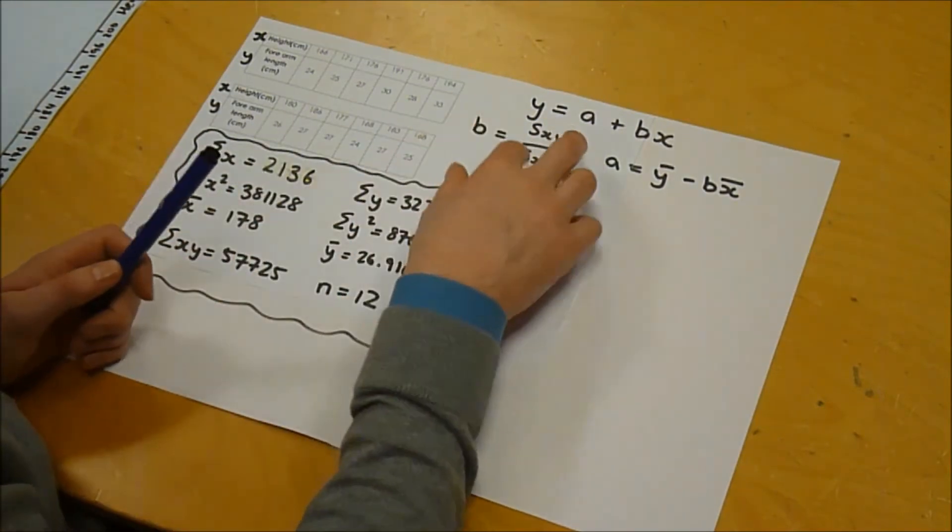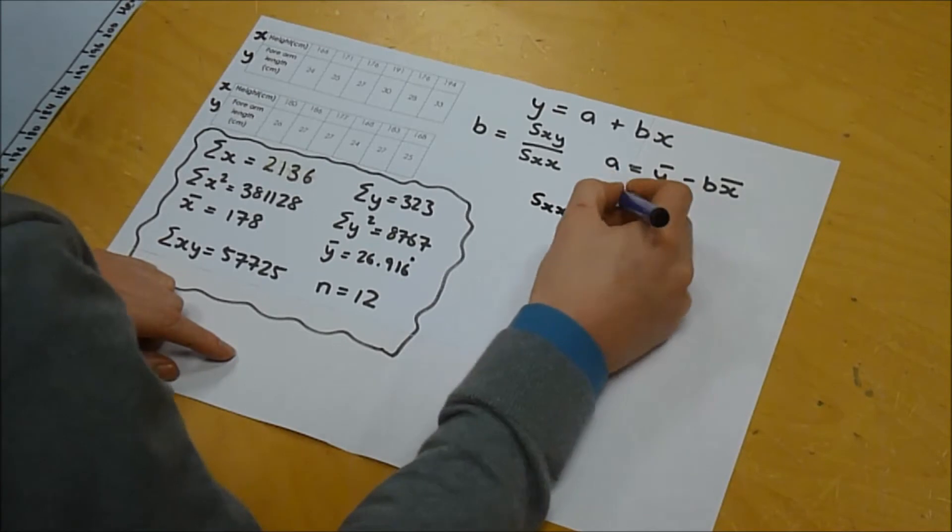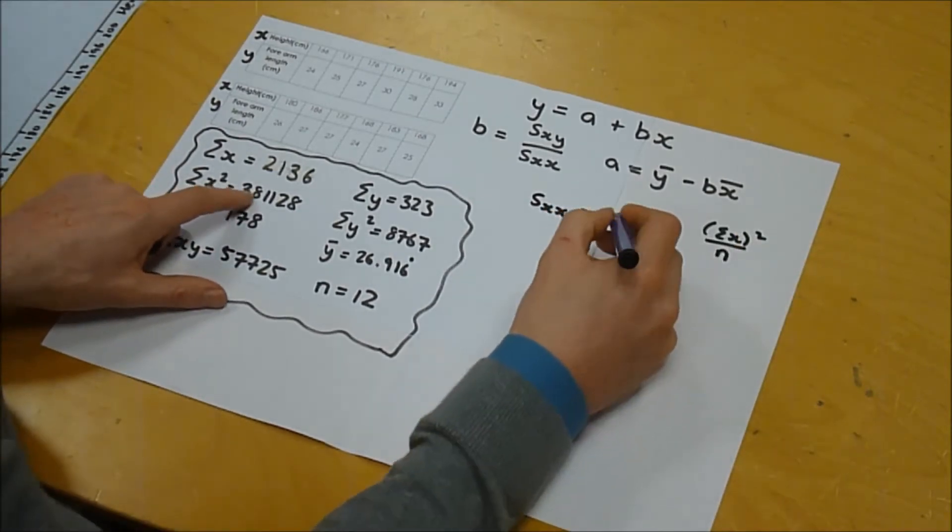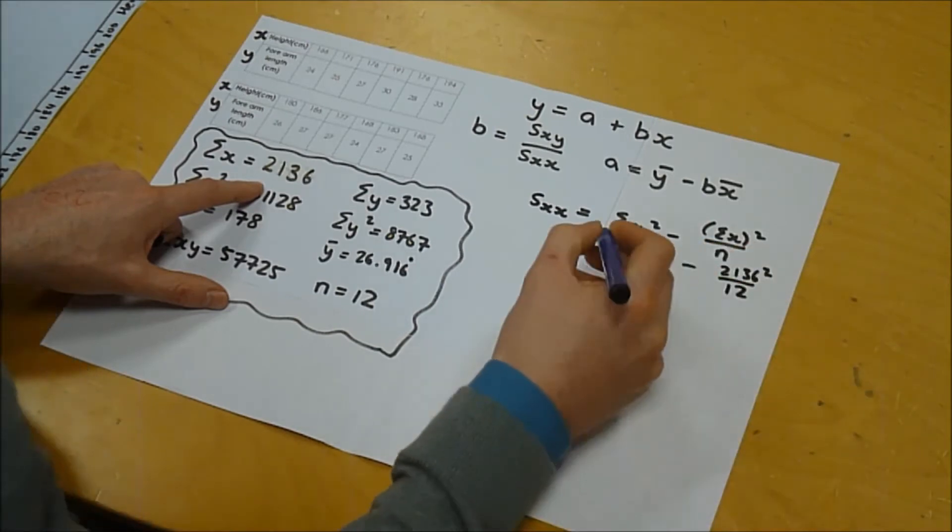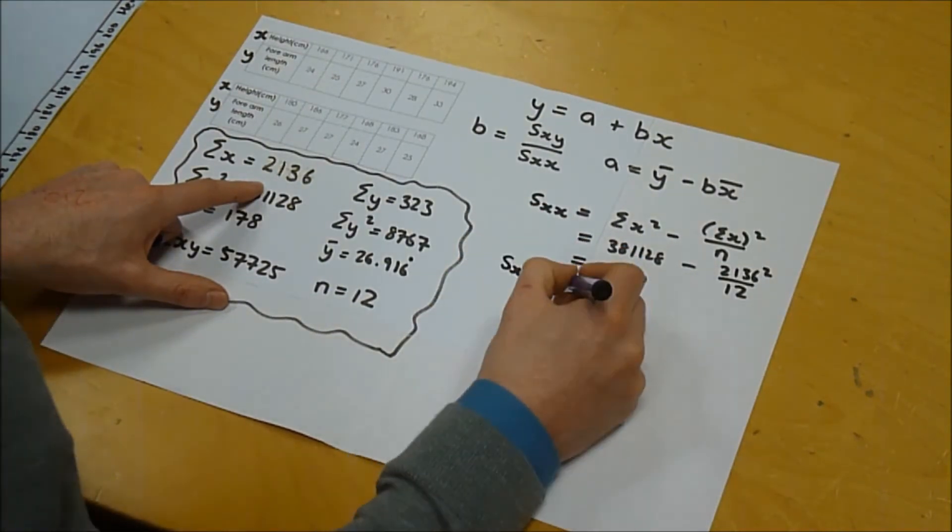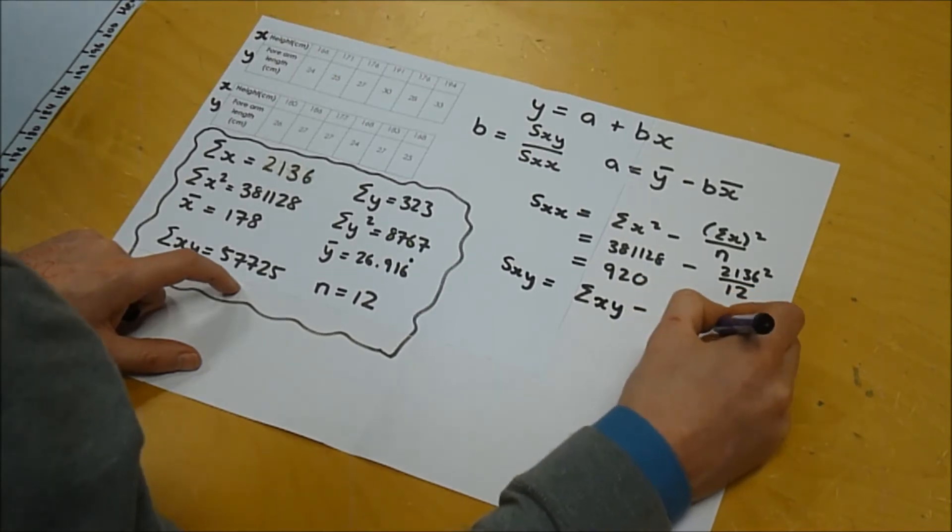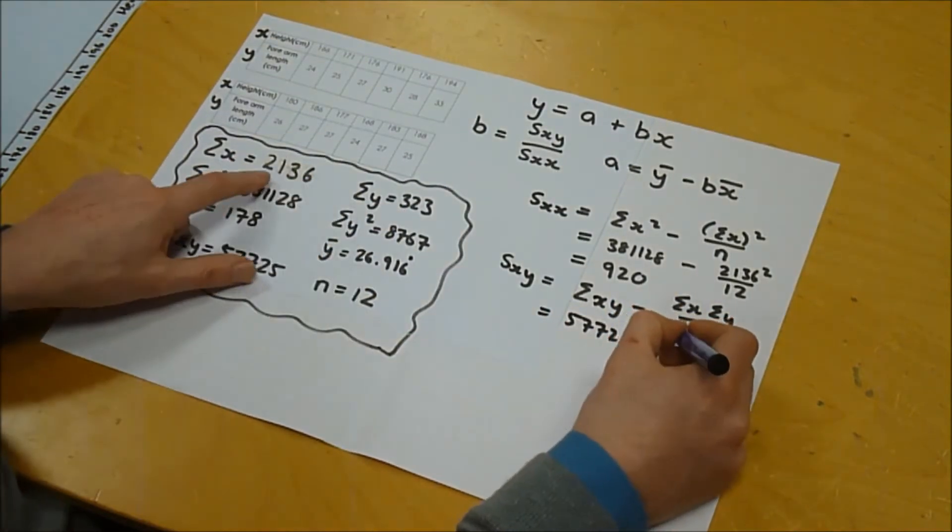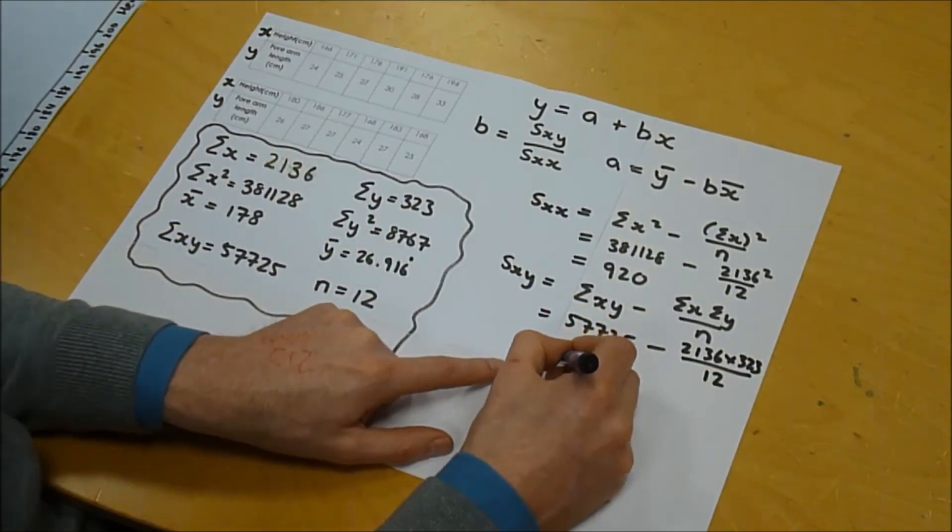Right, so we now need to calculate these things in order to work out a and b. So let's do s of xx first. Recall s of xx is equal to sum of x squared minus the sum of x all squared over n. The sum of x squared is 381,128 minus 2,136 squared over 12, and when you do that it comes out as 920. Now let's do s of xy. So that's the sum of xy minus sum of x times the sum of y all over n. Well, that is 57,725 minus 2,136 times 323 all divided by 12. When you do that it comes out as 231.